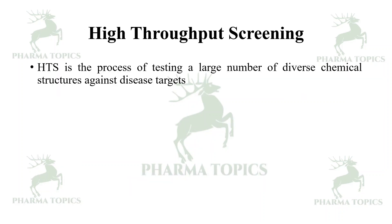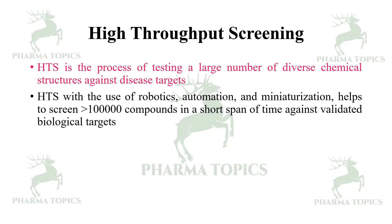High throughput screening is a process of testing a larger number of diverse chemical structures against disease targets. With the use of robotics, automation, and miniaturization, HTS helps to screen more than a lakh of compounds in a short span of time against validated biological targets.